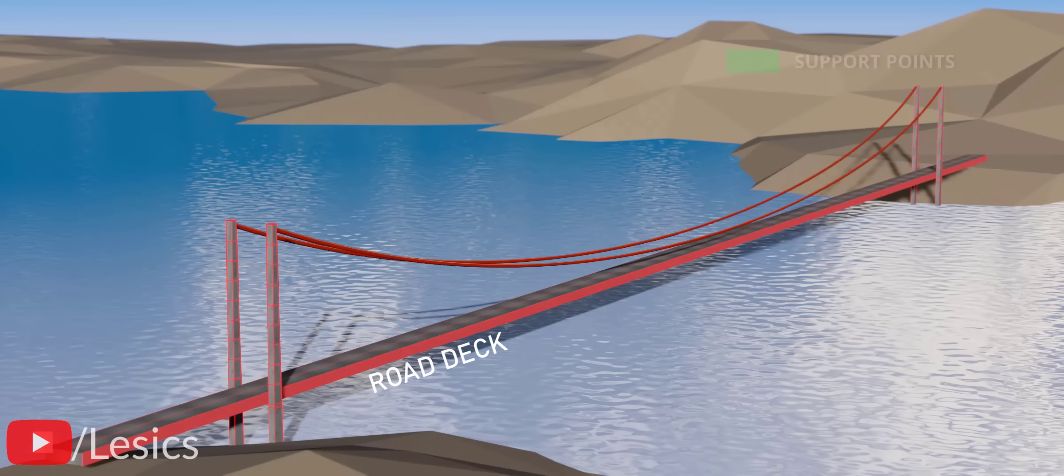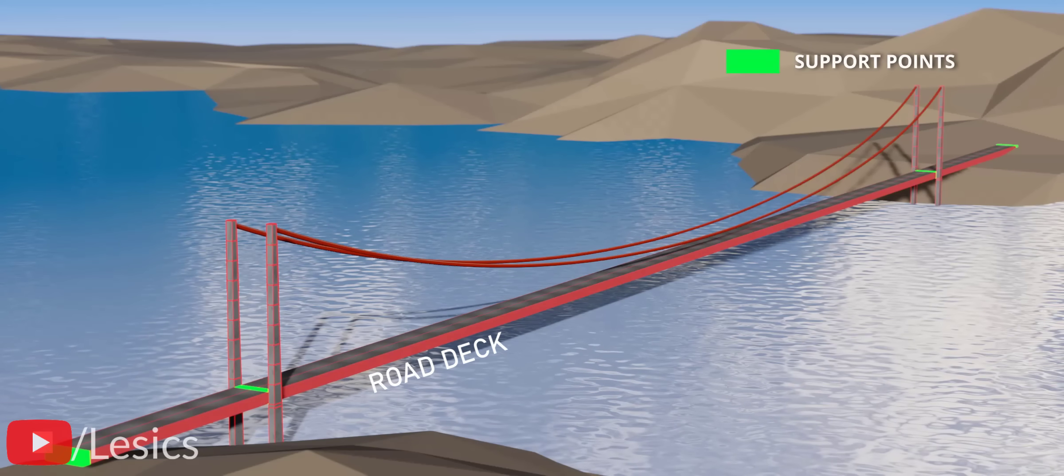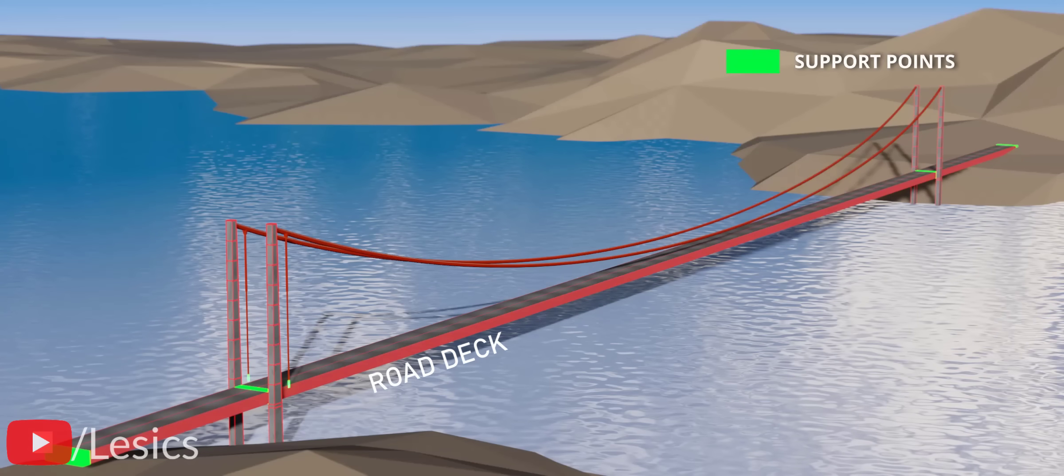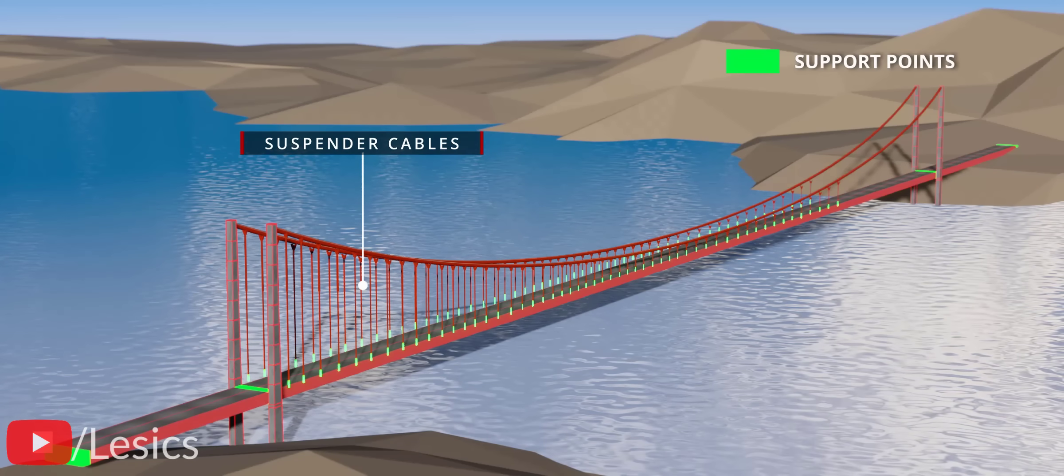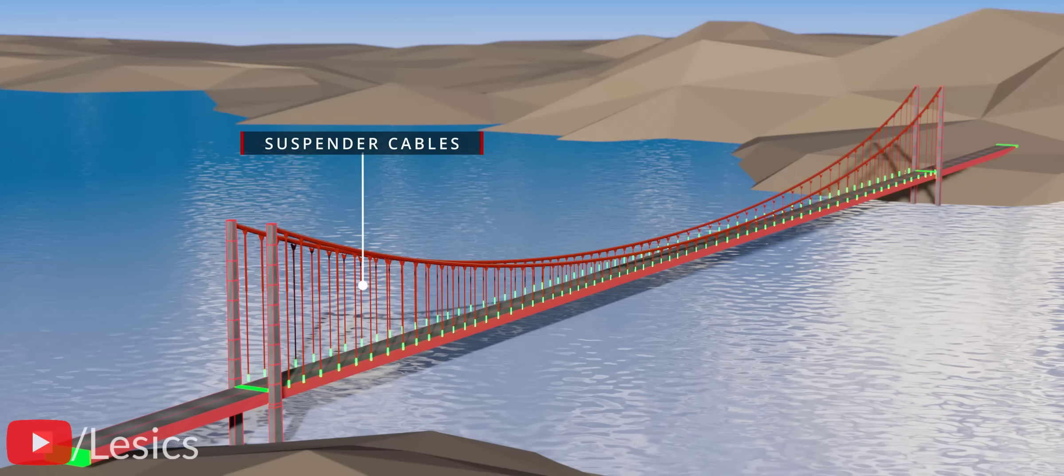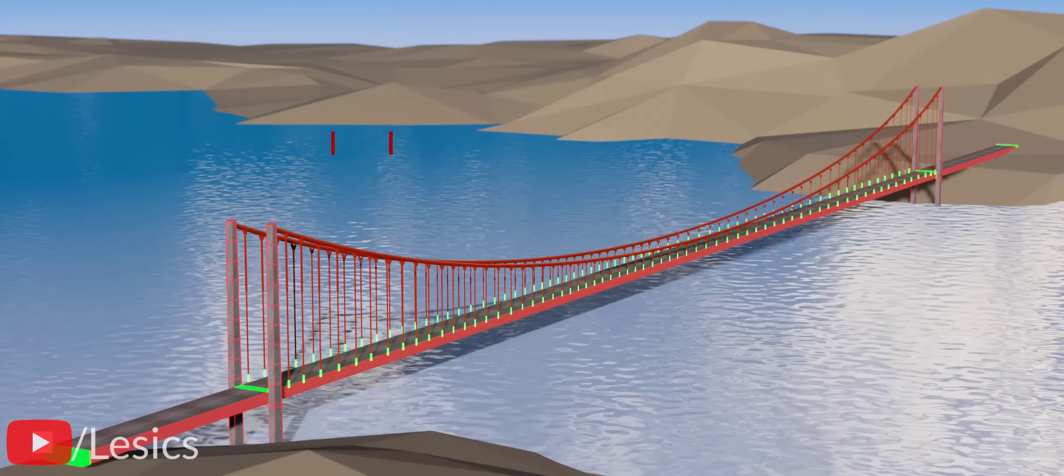This clearly provides support to the end of the road deck. When we connect the suspension cables between the main cable and the road deck, the bridge is also supported along its length, so the road deck won't fail as we saw earlier.